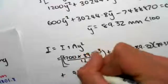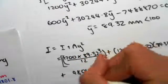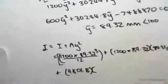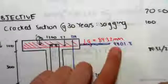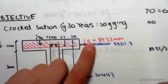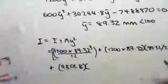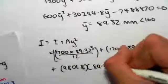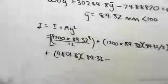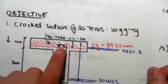Its area is 9801.8 times by y, which is the distance of its own centroid to the global centroid. So the global centroid is at 89.32, so 89.32 minus its own centroid, which is at the layer of steel. The centroid of the layer of steel is at 57 from the top, so that's squared.